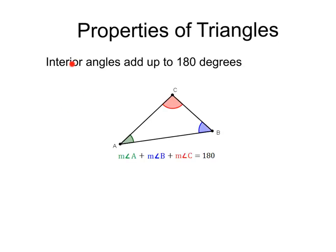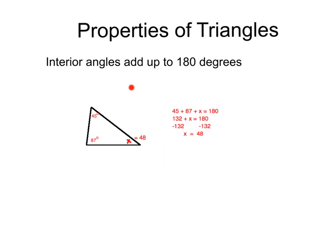One thing we know is that the interior angles of a triangle add up to 180 degrees. So if we take the measure of each of the three inside angles and add them up, they're going to equal 180. This is useful because if we had a missing angle of a triangle like so, and we knew the other two — 45 and 87 — we can add all of them up: 45 plus 87 plus x, set them equal to 180, and solve for your missing angle.